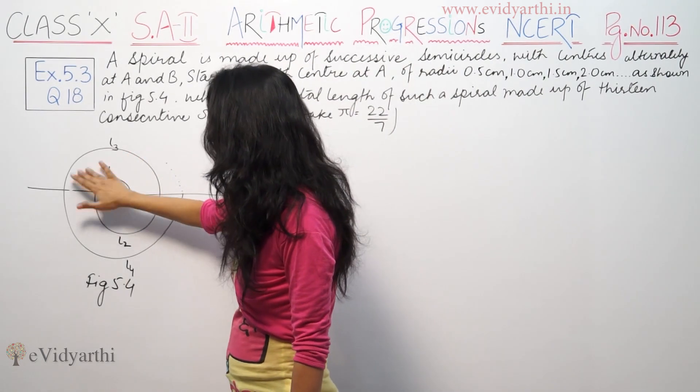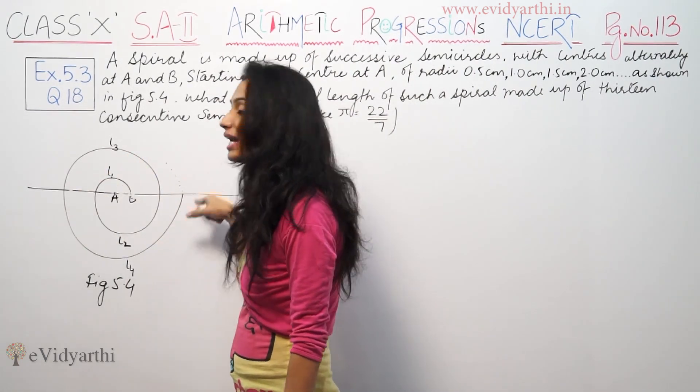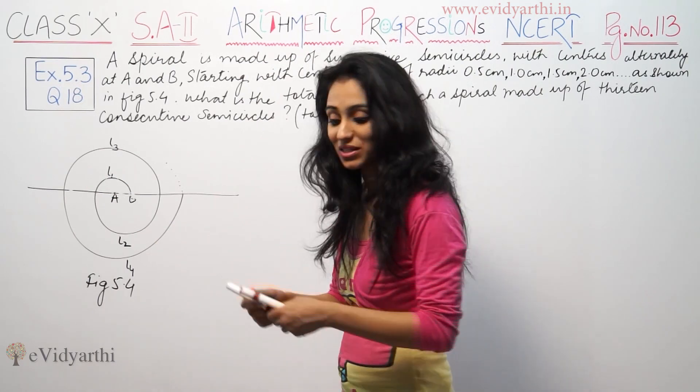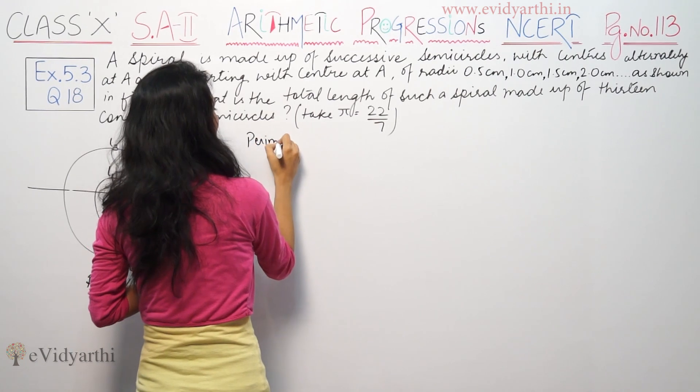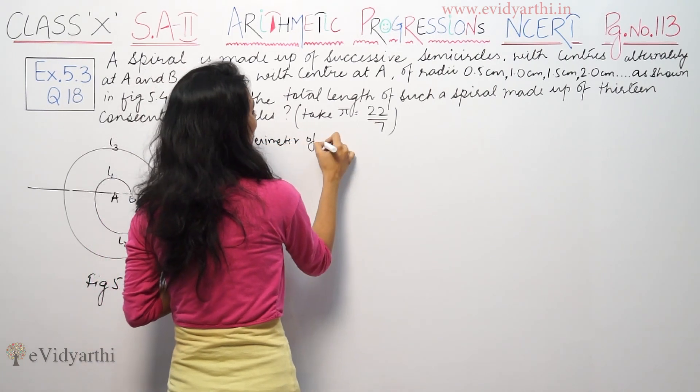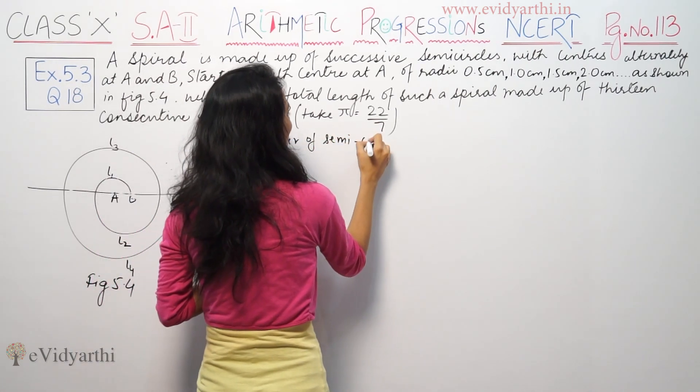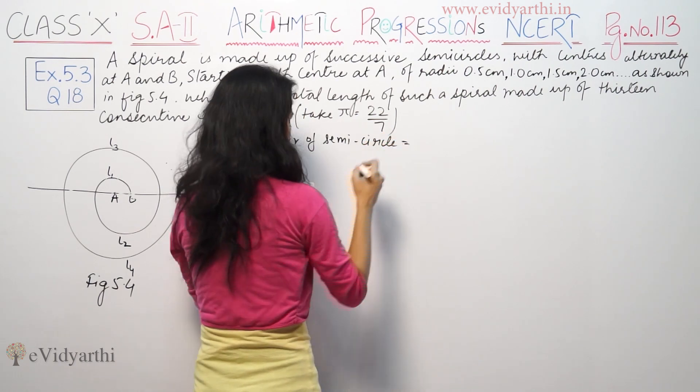So length means we need the perimeter. We need perimeter of the semicircles. The formula is required.